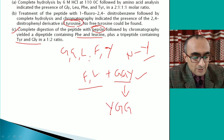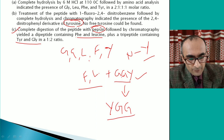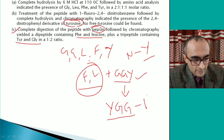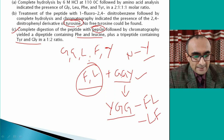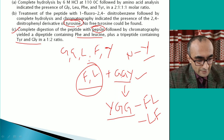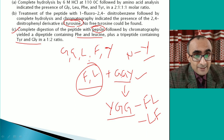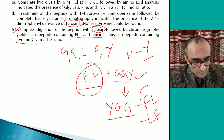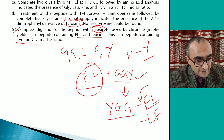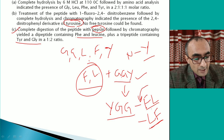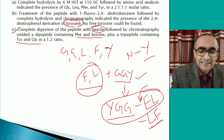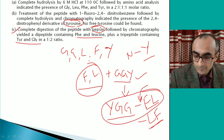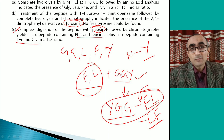To determine whether the dipeptide is FL or LF: pepsin cleaves on the N-terminal side of aromatic amino acids, so it would cleave before F — giving FL as the dipeptide. If it were LF, you would not get a dipeptide containing both L and F. Therefore, the complete sequence is YGGFL. This demonstrates how sequences of peptides and proteins can be deduced and reconstructed using protease digests and Edman degradation.